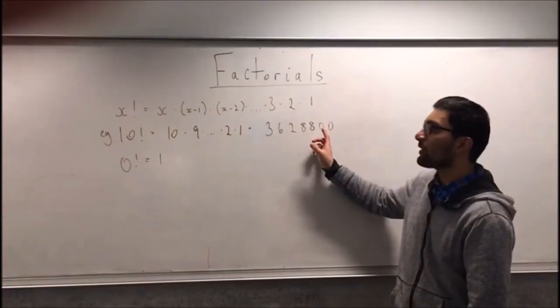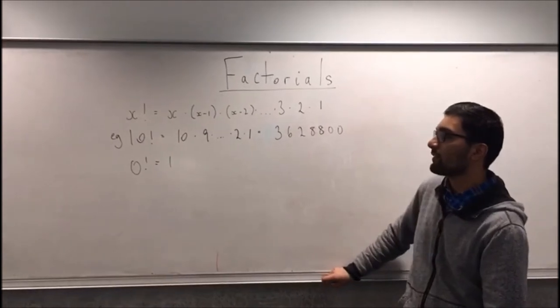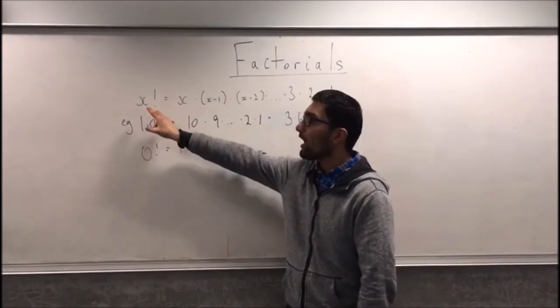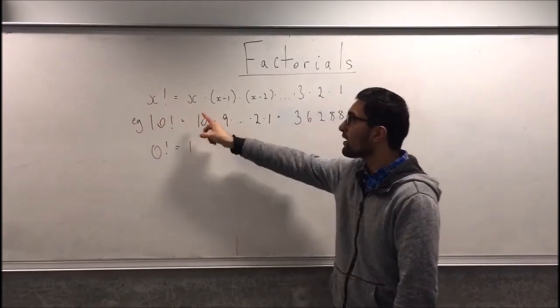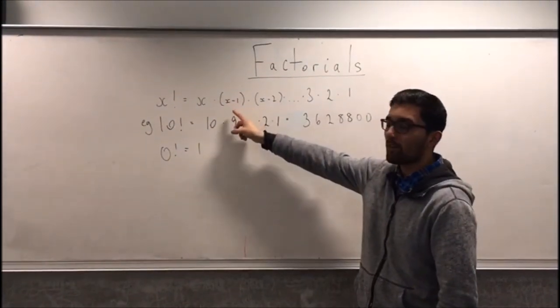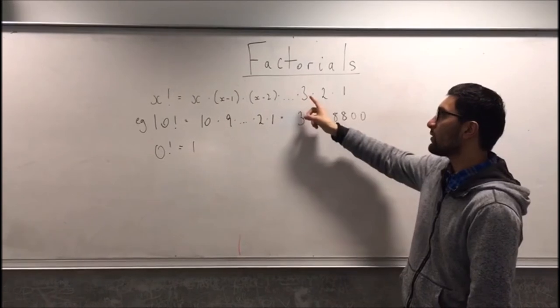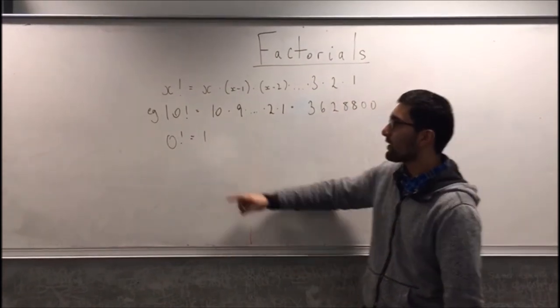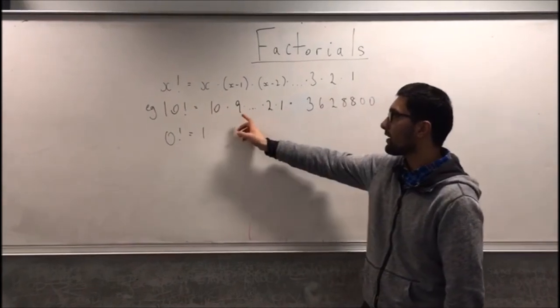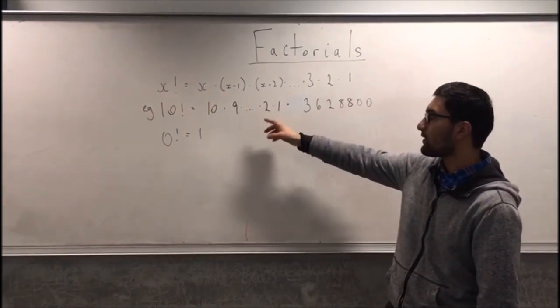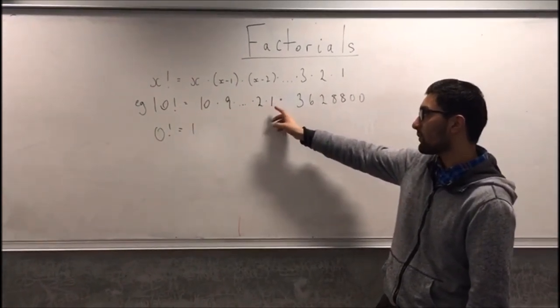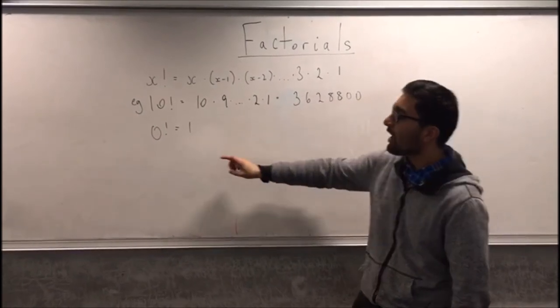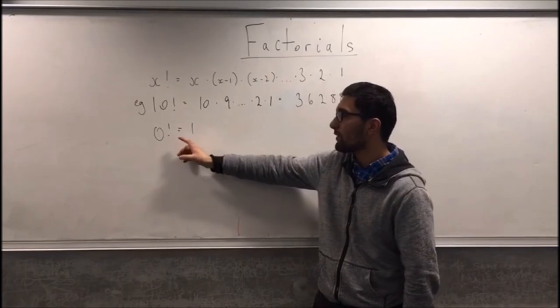Factorials are an essential mathematical concept. Essentially, x factorial, any number factorial, is itself multiplied by x minus 1, x minus 2, all the way to 3 times 2 times 1. So for example, 10 factorial is 10 times 9 times 8 times 7, on and on until 2 times 1, which is 3,628,800. As a special case, 0 factorial is defined to be 1.